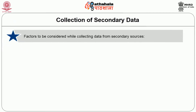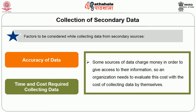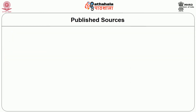Factors to be considered while collecting data from secondary sources: first, accuracy of data — one should evaluate the credibility of sources of data and methods used to collect data because these factors directly influence the accuracy of data. Second, time and cost required in collecting data — some sources of data charge money in order to give access to their information, so an organization needs to evaluate this cost with the cost of collecting data by themselves.